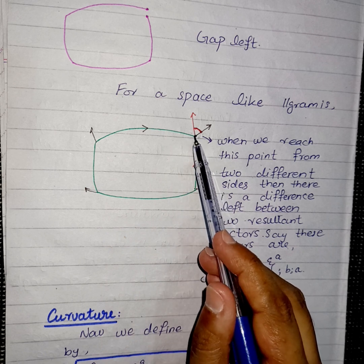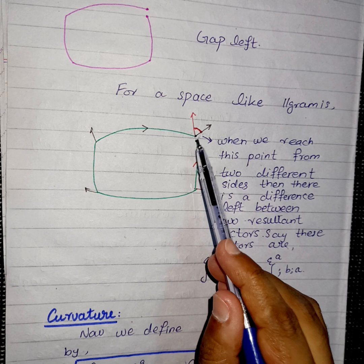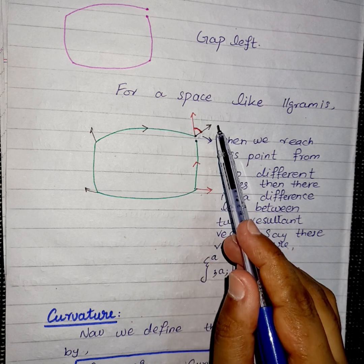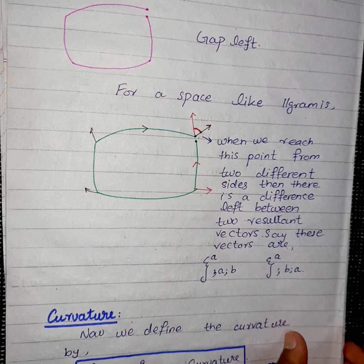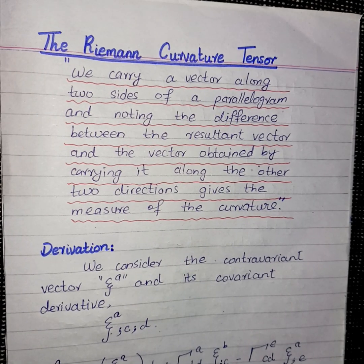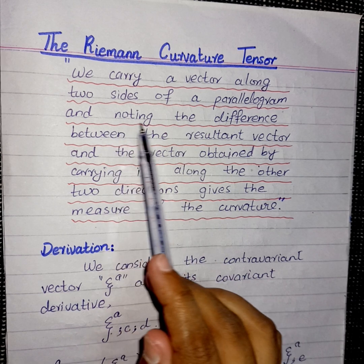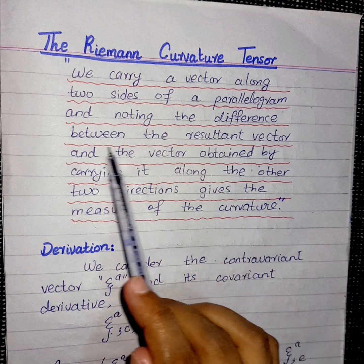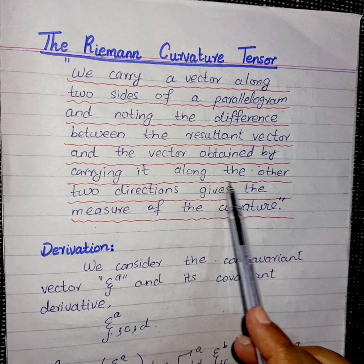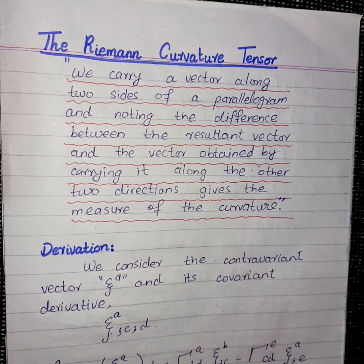If we take a vector along two different directions of this parallelogram, then the resultant of this vector actually gives us the curvature. We defined it such that we carry a vector along two sides of a parallelogram and note the difference between the resulting vector and the vector obtained by carrying it along the other two directions — that difference gives the measure of the curvature.